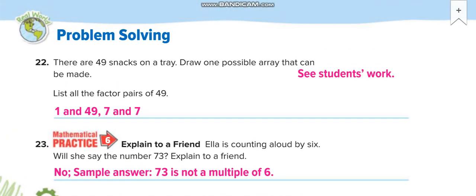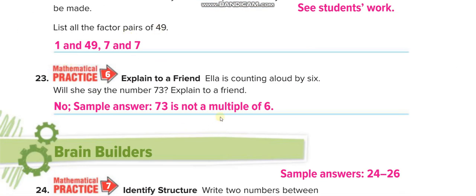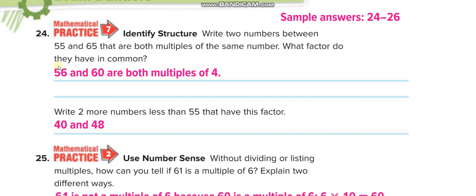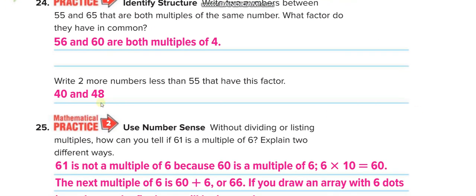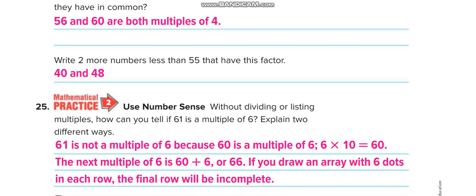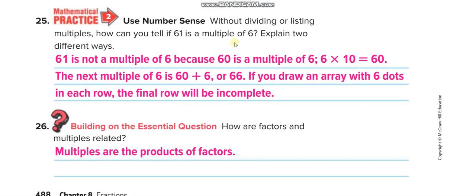On the next page: factor pairs of 49 again, and a word problem — Ella is counting aloud by sixes; will she say the number 73? Is 73 a multiple of 6? No. Also: write two numbers between 55 and 65 that are both multiples of the same number. Write your own examples in the comment box. Without dividing or listing multiples, how can you tell if 61 is a multiple of 6?